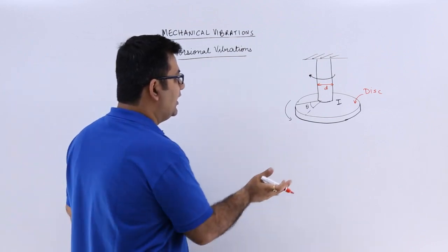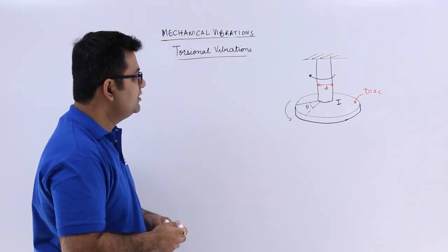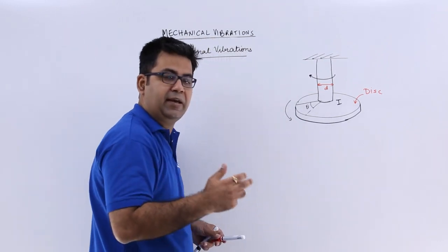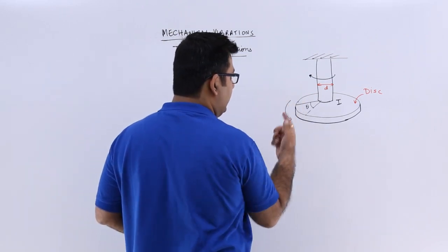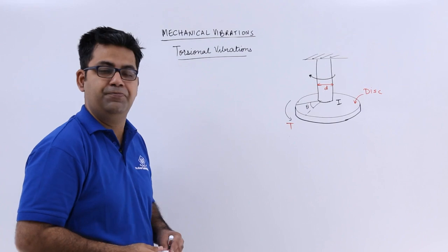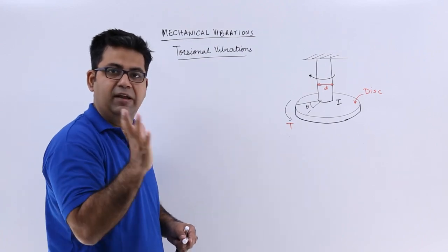This disc is attached to this shaft by some means. So what happens is that you give the shaft a rotation, an angular displacement initially of theta. Let's say the applied torque is T. And you leave it. You give it a displacement, leave it.